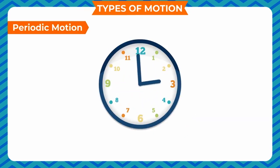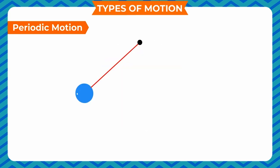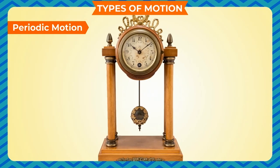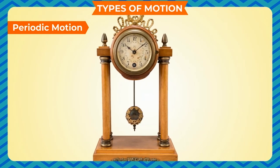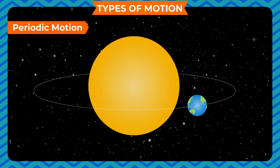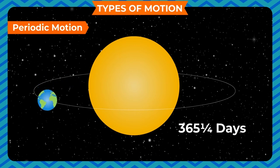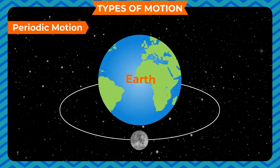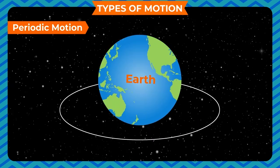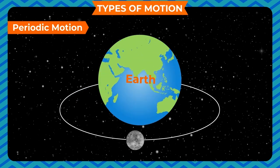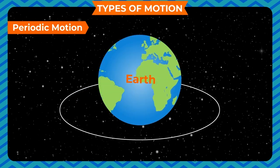Periodic motion: a motion which repeats itself after a fixed interval of time is called periodic motion. A ball tied to a string, when displaced from its mean position, undergoes periodic motion. The motion of a clock pendulum or a swing is similar. The motion of the earth around the sun is periodic — it always takes 365 and 1/4 days to complete one revolution. The motion of the moon around the earth and the motion of the hands of a clock are also periodic. Circular motion is an example of periodic motion. Motion that is not periodic is known as non-periodic motion.